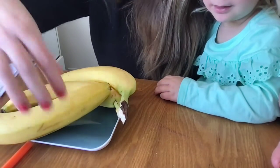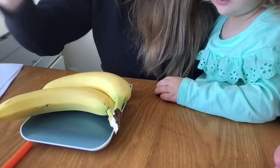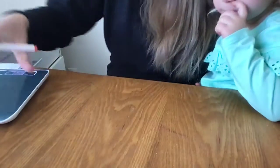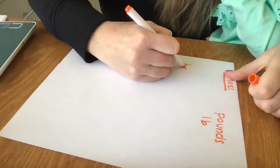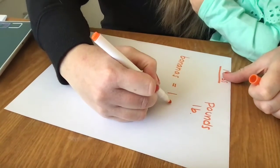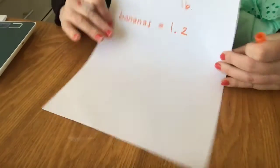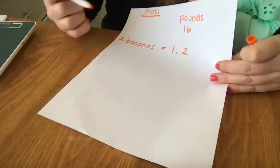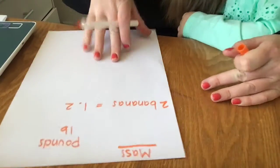Taking two bananas off brings it back to 1.2. In my journal I'd write 'two bananas — 1.2 pounds,' so we know they're about one pound. Now I want you to go around the room and find some things you think weigh about one pound. Bring them to the scale — we want to leave the scale on the table — weigh them, and write them down in your journal.